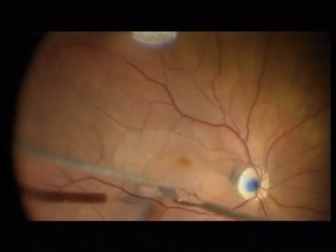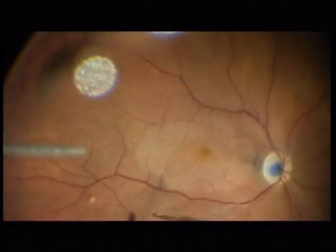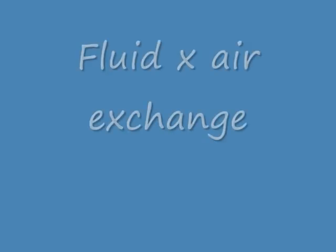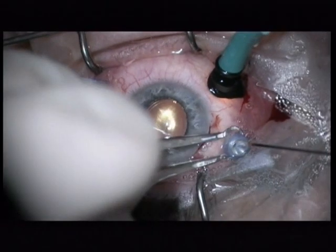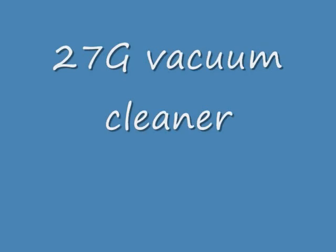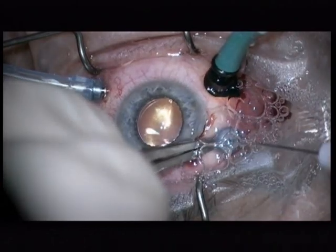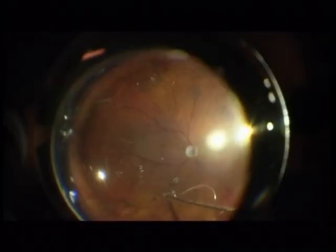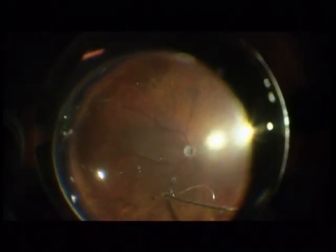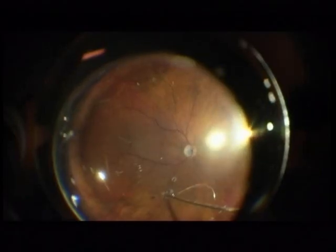This is not a standard procedure for me — I only do this if I see wrinkling. Fluid-air exchange. And now I use a vacuum cleaner, 27 gauge, because I want to remove the subretinal fluid through these small ruptures.